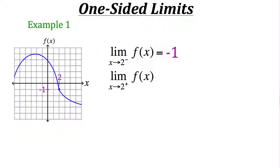Now, what if we were asked to find the limit of our function as x approaches 2 from the right side, signified by a positive sign indicating we're coming from the positive x-axis? Starting from the right side and approaching x equals 2, we again approach the output value of negative 1. So the limit from the right side is also negative 1.